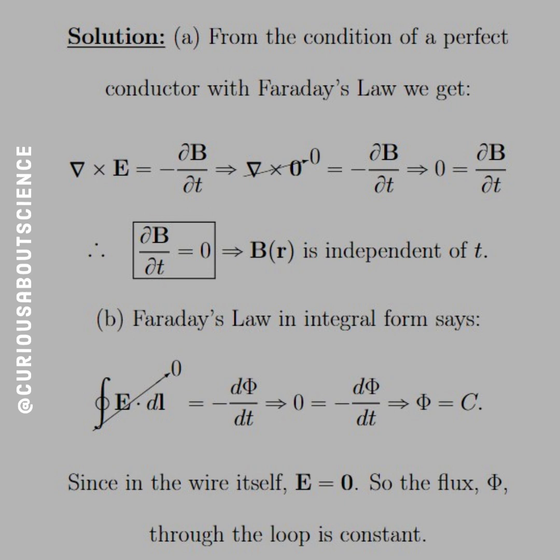So that's pretty sweet. And what we see is that now we have 0 equal to the negative time derivative of phi, we can integrate both sides and show that phi is equal to some constant C. And since in the wire itself, E equals 0, so the flux phi through the loop is constant.